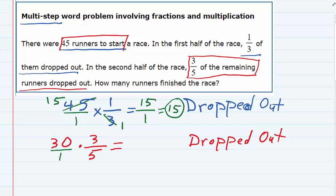I can cross-cancel here as well. 5 goes into 5 once, 5 goes into 30 six times.